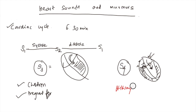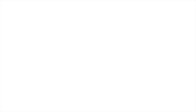That extra work done by the atria manifests as forceful contraction, resulting in the production of S4. S4 is always pathological - unlike S3, which can be physiological, the presence of S4 is always pathological.